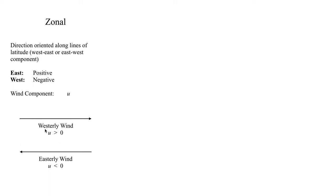To summarize: a westerly wind going from west to east is a positive value of the zonal component u, and an easterly wind going from east to west is a negative value of the zonal component u.